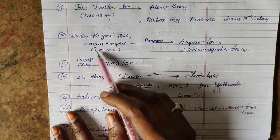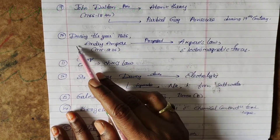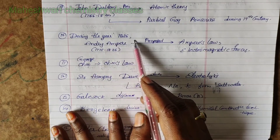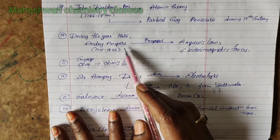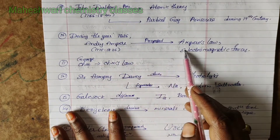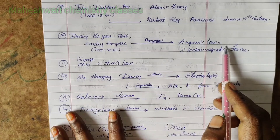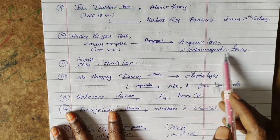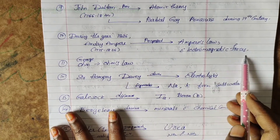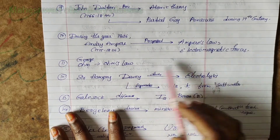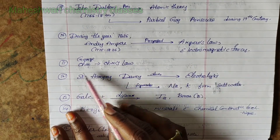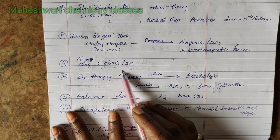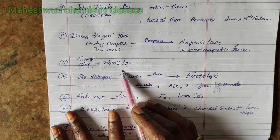Tenth point: During the year 1826, Andre Ampere proposed Ampere's law, and at the same time described electromagnetic forces. Eleventh point: George Ohm explained Ohm's law.